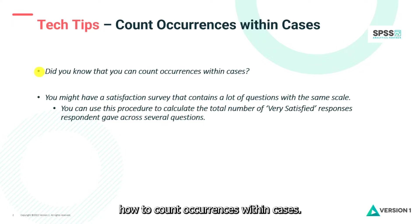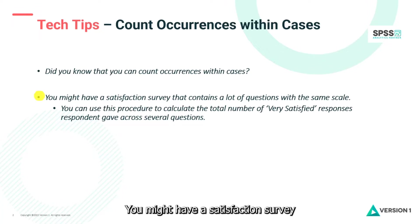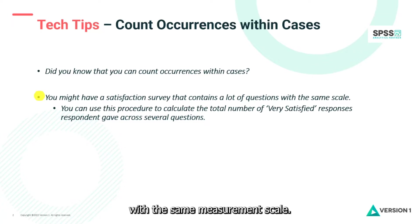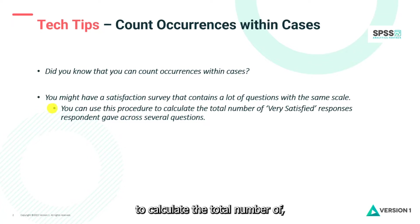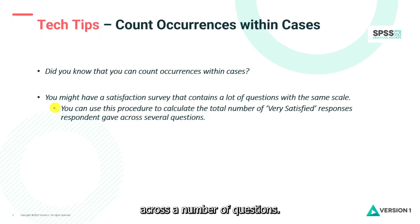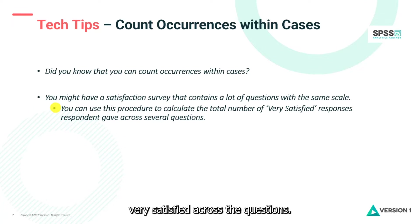We wanted to show you how to count occurrences within cases, and to give you an example of when this can be useful: you might have a satisfaction survey with a number of questions with the same measurement scale. You could use this procedure to calculate the total number of, for example, very satisfied responses across a number of questions — so you could see for each respondent how many times they said 'very satisfied' across the questions.